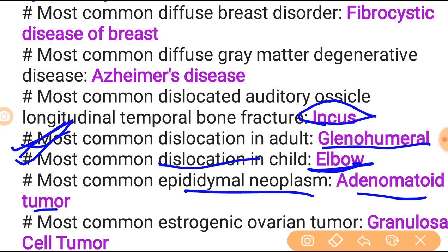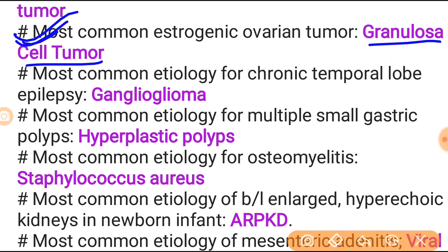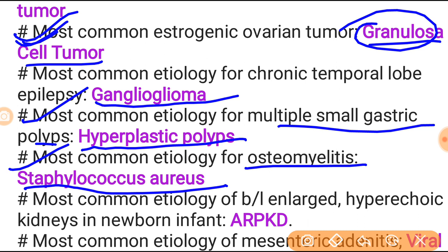Most common estrogenic ovarian tumor is granulosa cell tumor - very important, revise all aspects. Most common etiology of chronic temporal lobe epilepsy is ganglioglioma. Most common etiology of multiple small gastric polyps is hyperplastic polyp. Most common etiology of osteomyelitis is Staphylococcus aureus - remember there are many types of etiology based on condition, and in sexual workers it is gonococcal infection rather than Staphylococcus.